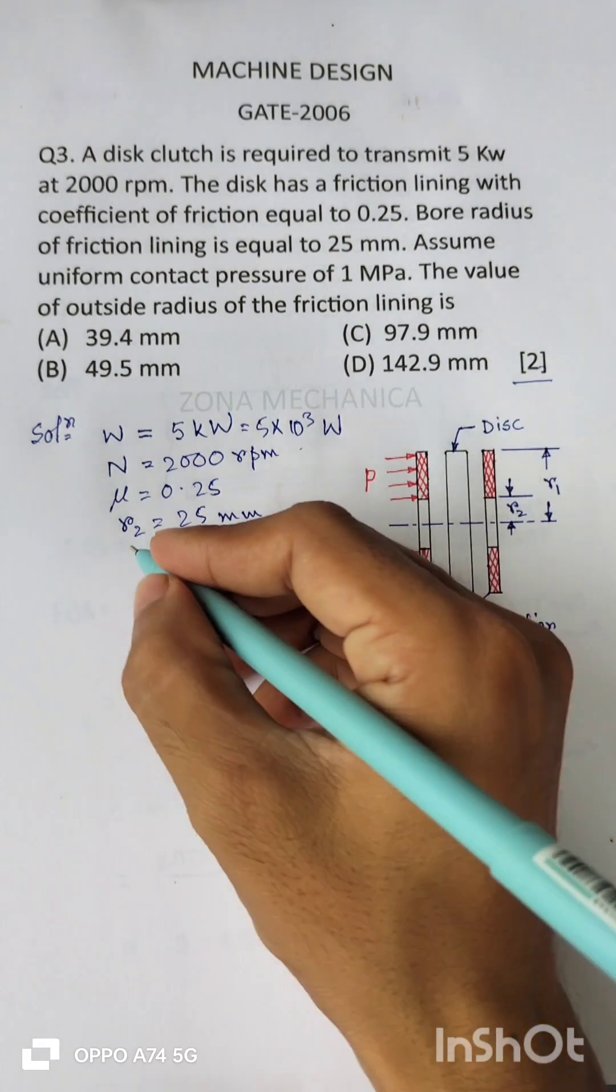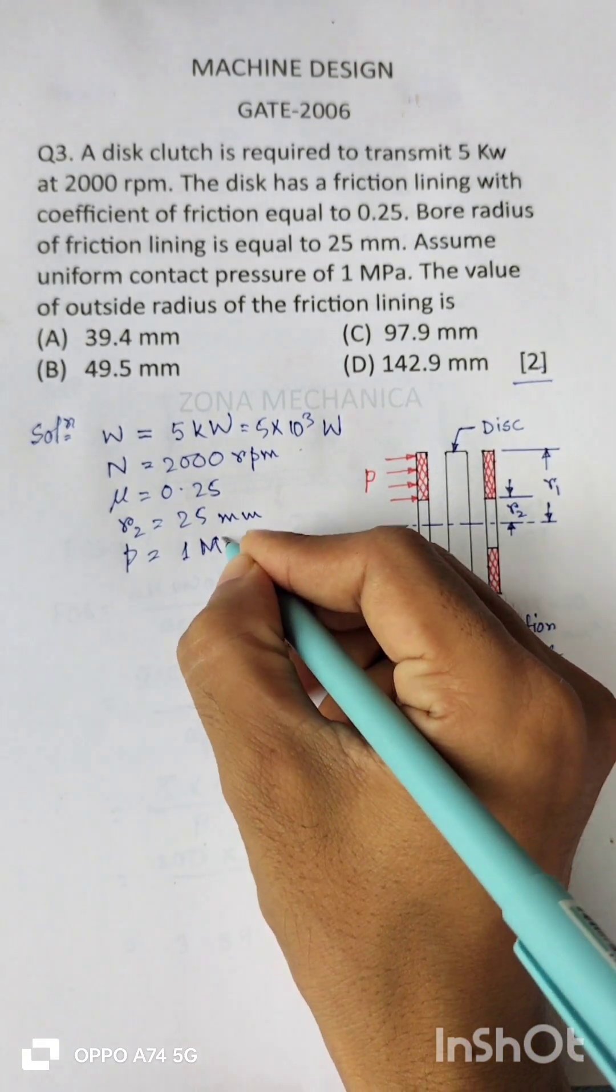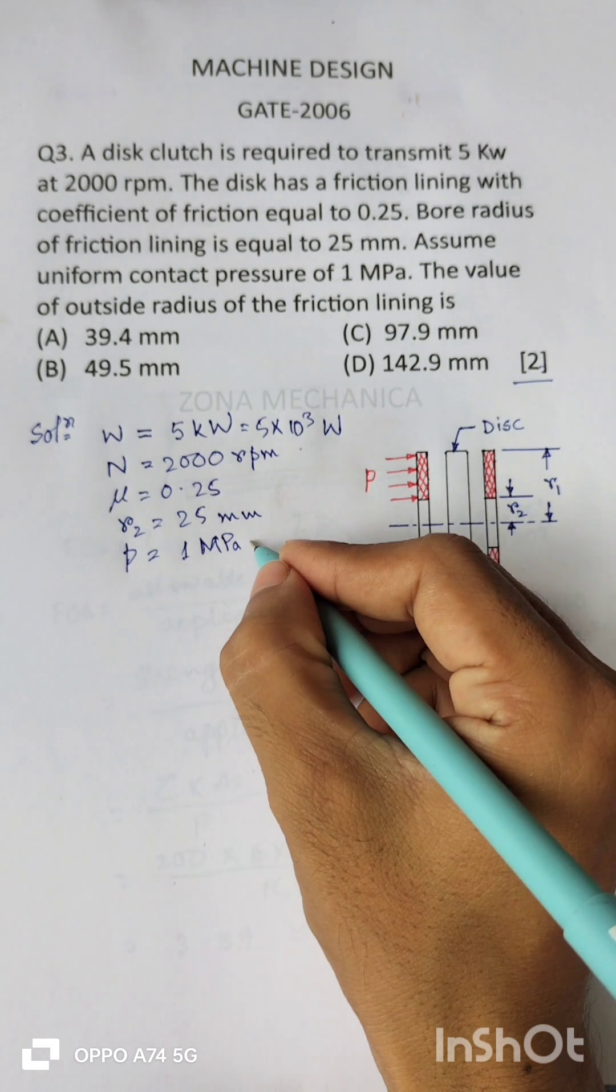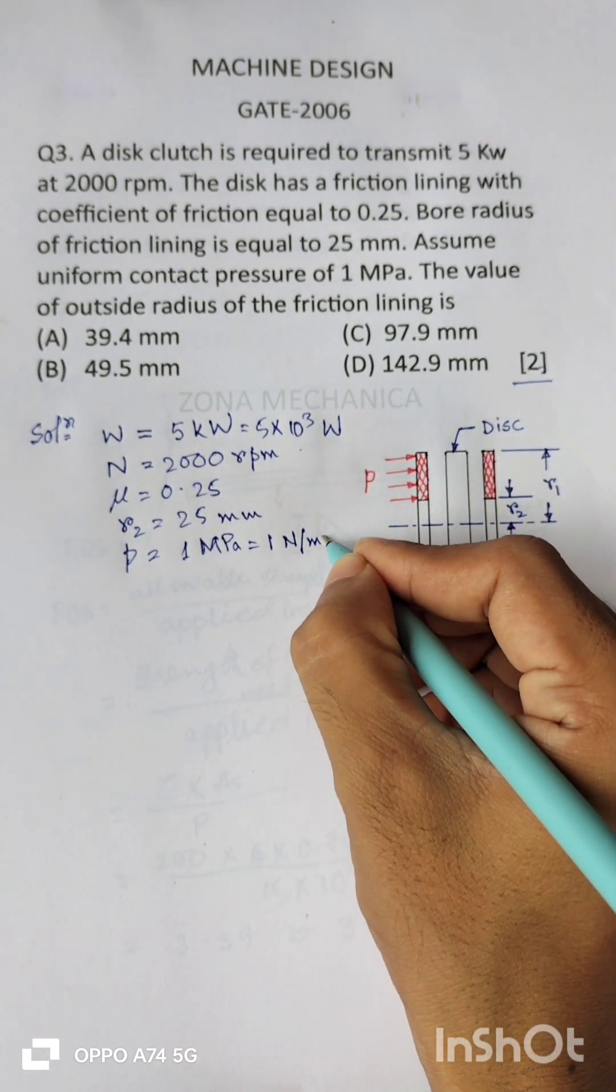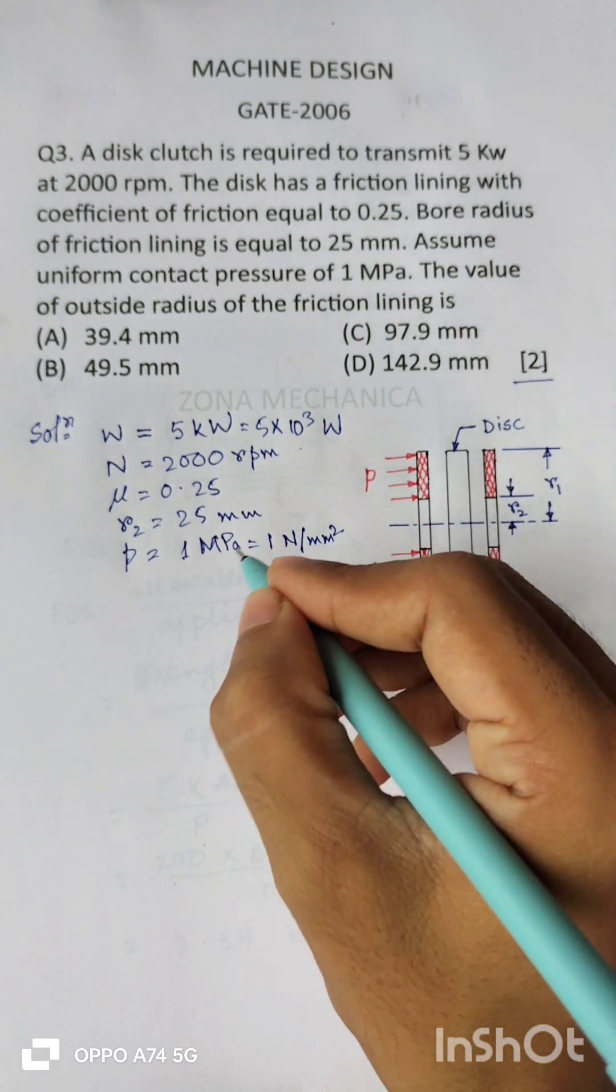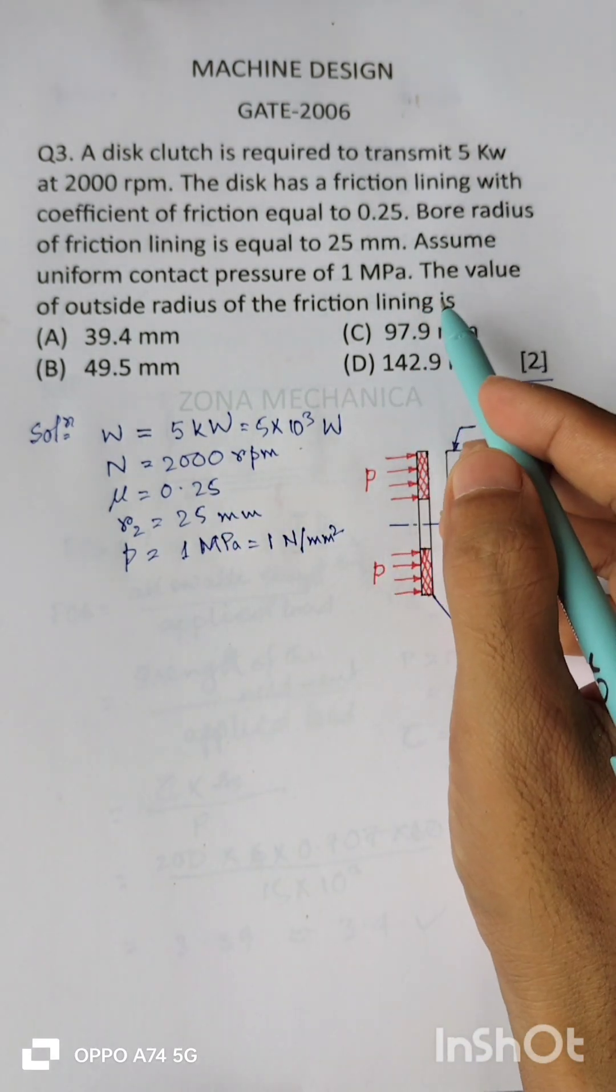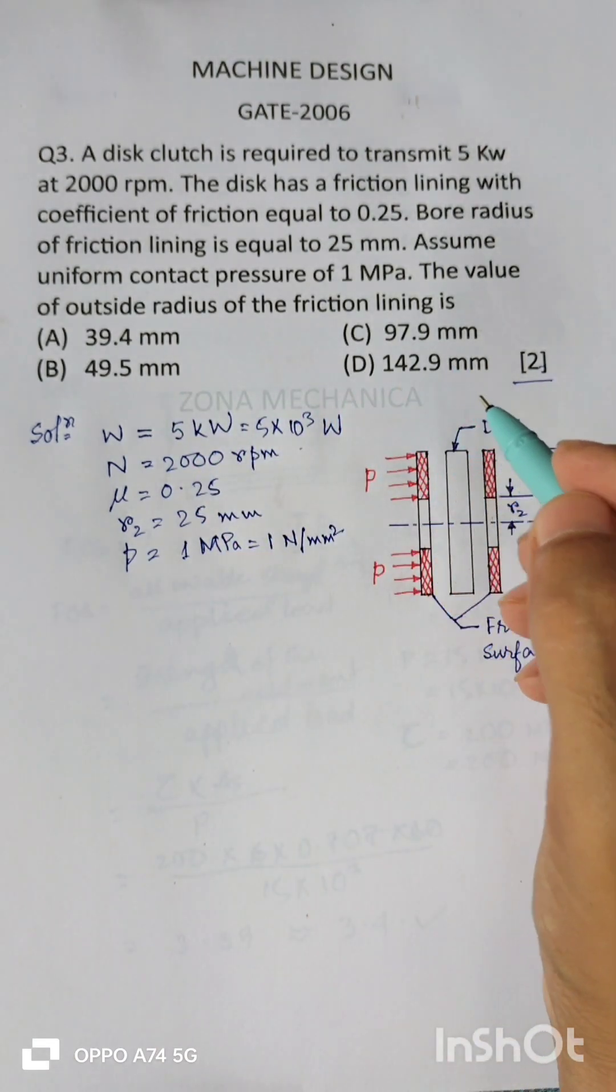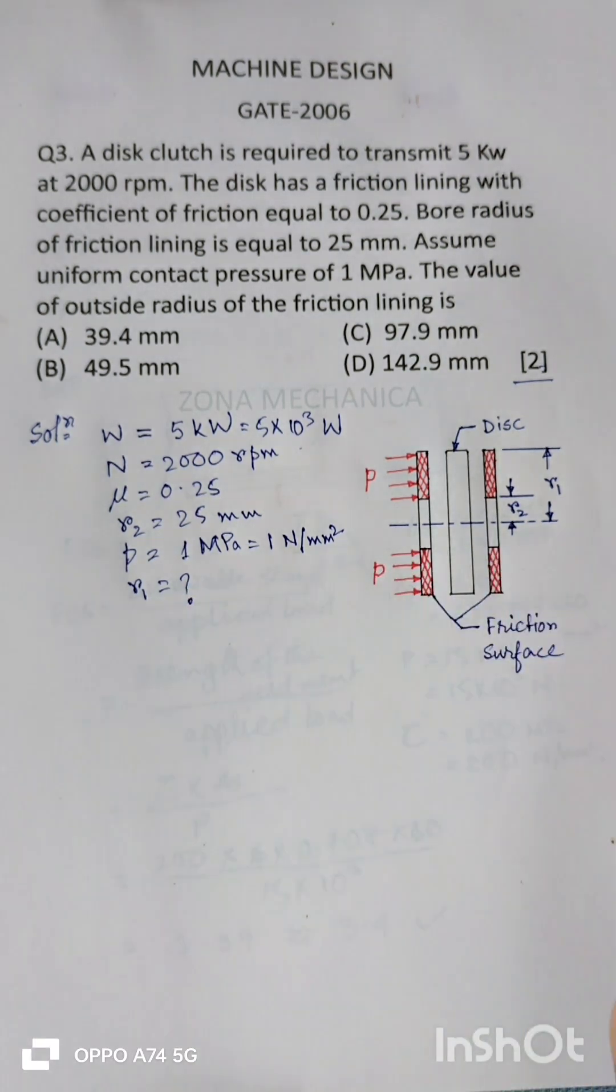Uniform pressure intensity P is 1 MPa, that is 1 newton per square millimeter. And the question is, what is the value of outside radius of the friction lining, that is R1? This is the question we have to find out.